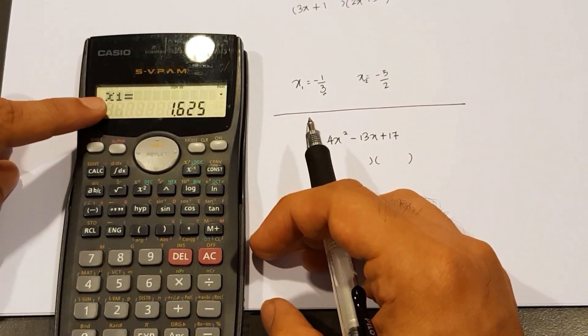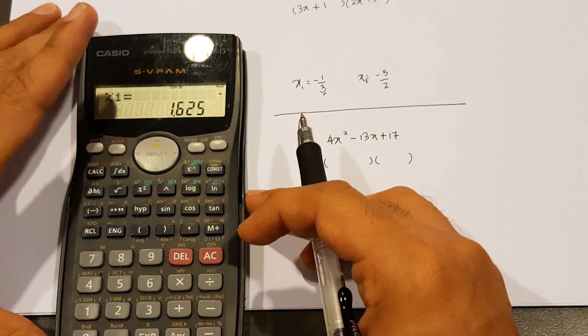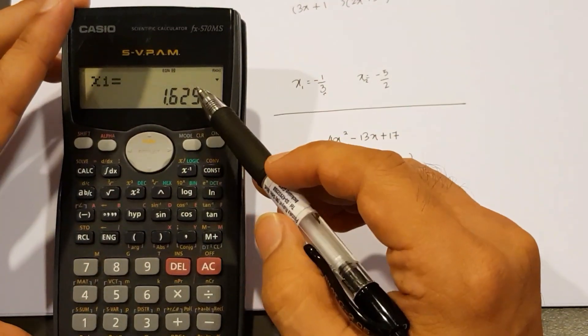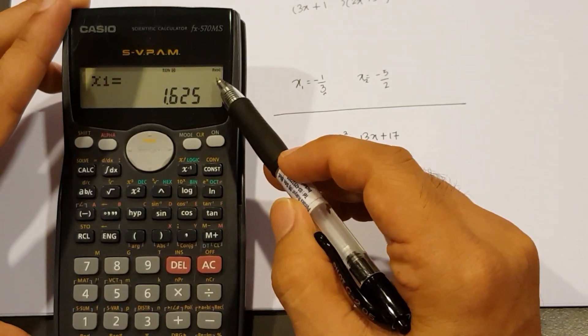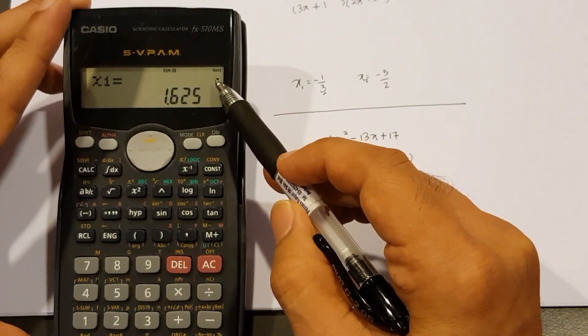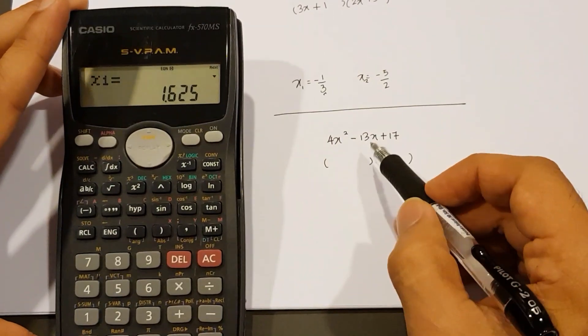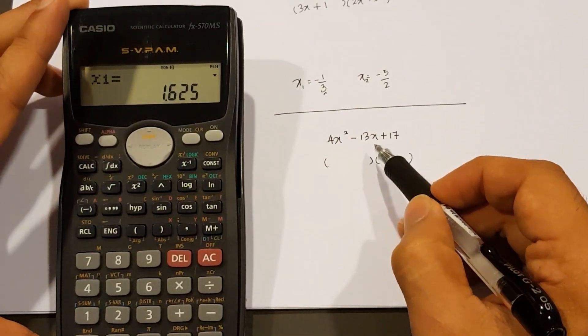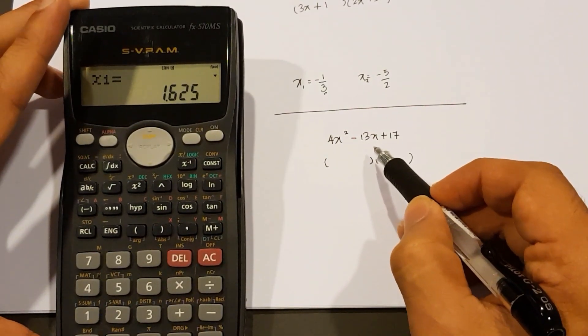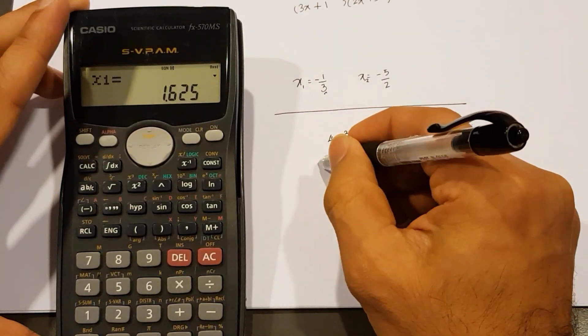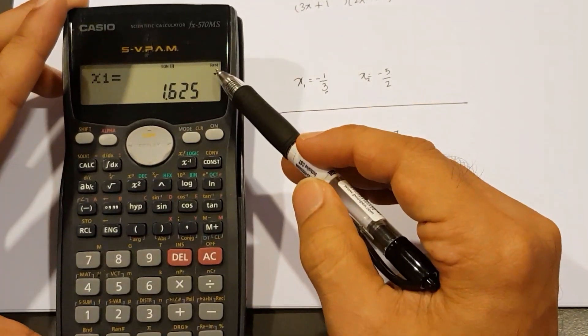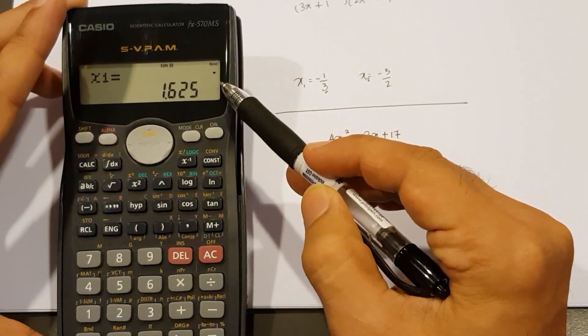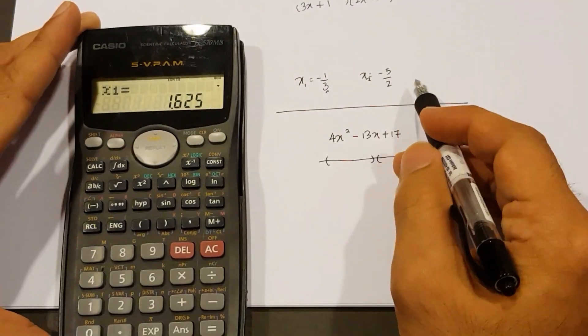We have got x1, but if you take a closer look, you see that? That symbol here indicates that we have an imaginary number. What it means is that this expression, or this quadratic expression, cannot be factorized. Therefore, we do not have any factors. If any time your calculator gives you this, it means we have got no factors.